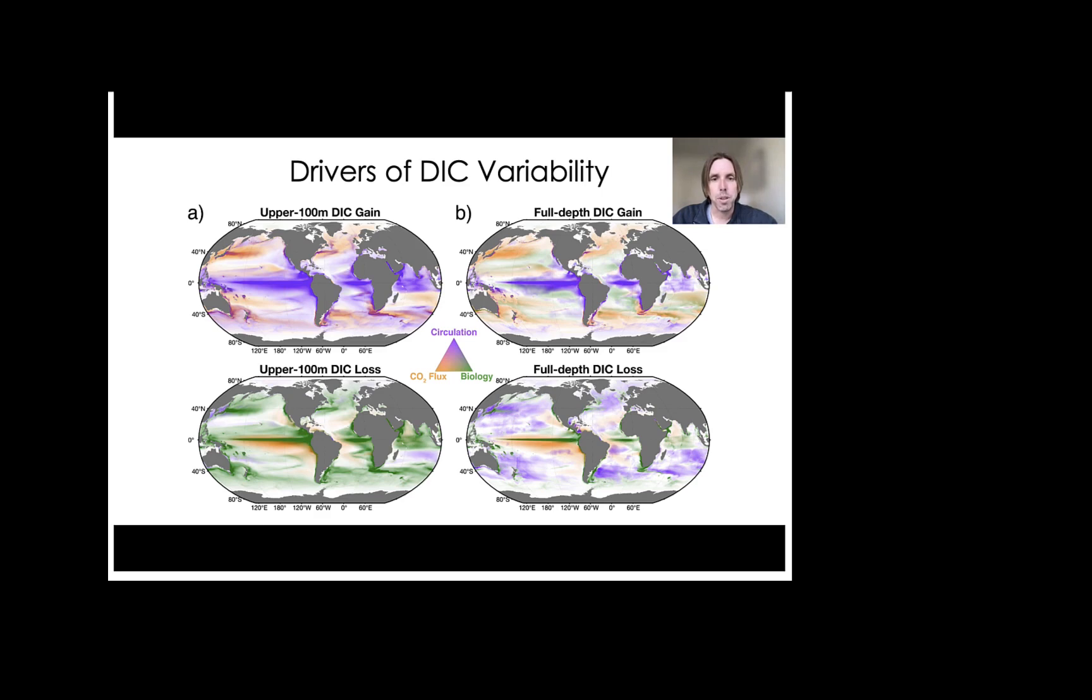In the full depth ocean, DIC losses, which are the bottom panel in B, they result from circulation and they're substantial outside the equatorial regions. This highlights the large scale extratropical divergence, so the downwelling, required to balance the equatorial convergence of DIC rich waters from upwelling.